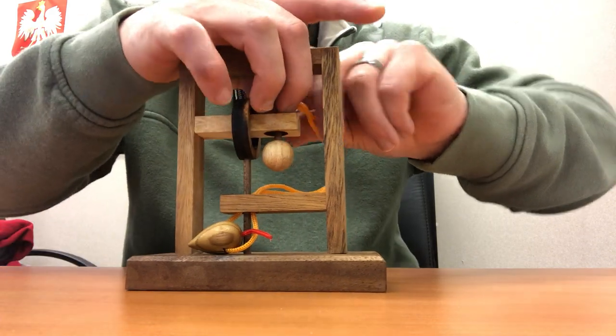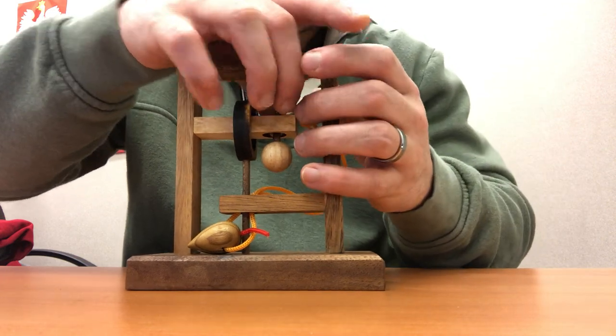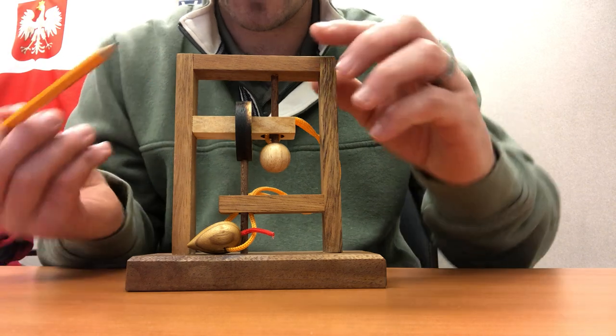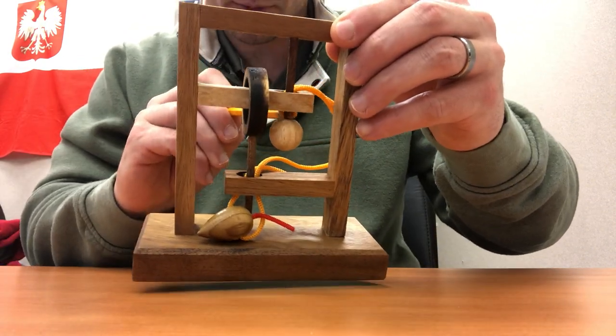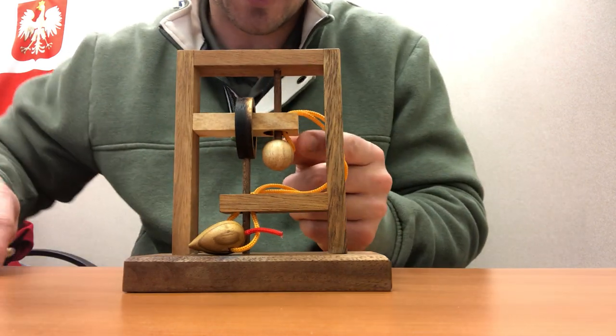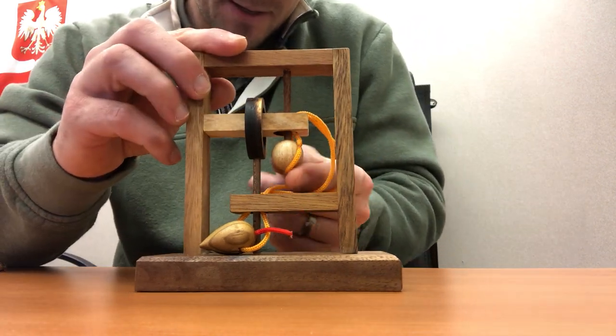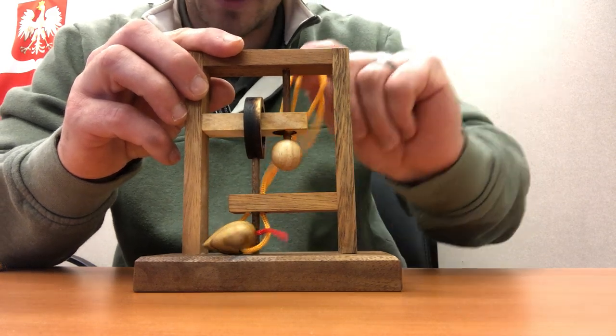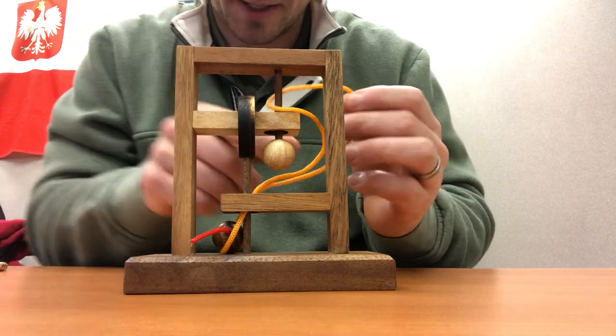One of the things that I like to do, especially with these smaller puzzles where it can be tricky to grab the string, I like to take a pencil. Here's a tip: you can just point it in there to pull the string out. So here we go. I'm pulling that string down, going to go around and back up.